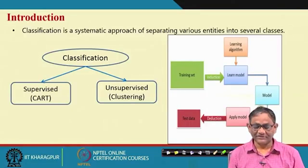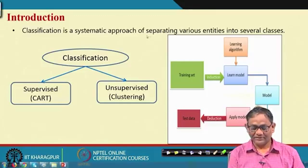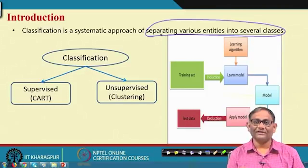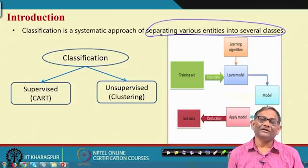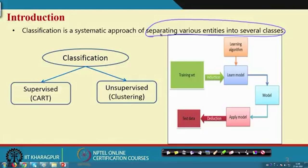What is classification? Classification is a systematic approach of separating various entities into several classes. For example, if we consider living bodies, you can find animals and non-animals. Among animals, some are wild animals and some are domestic animals. So given an animal, if it is a cow you say it is a domestic animal, but if it is a tiger you say it is a wild animal. That is basically the concept of classification.